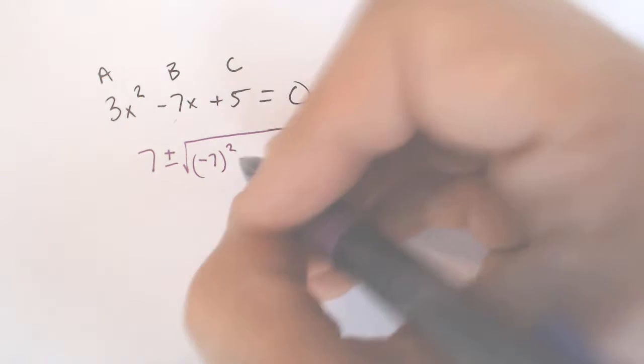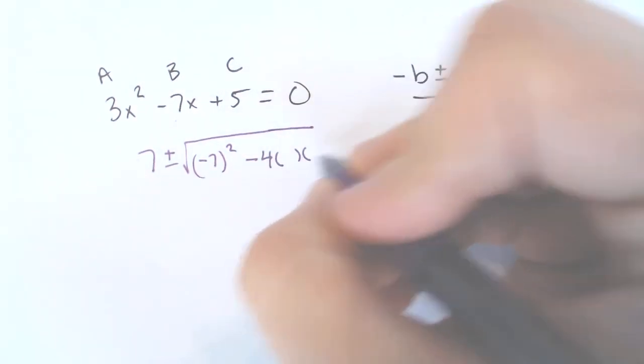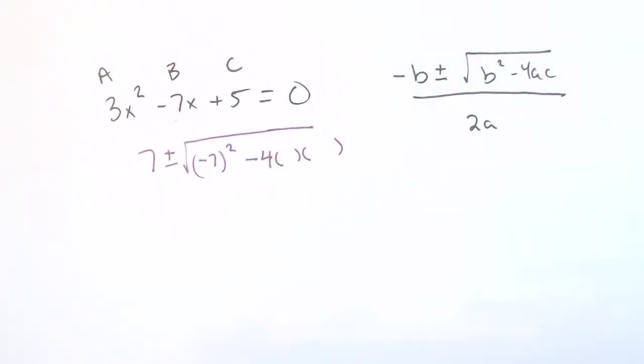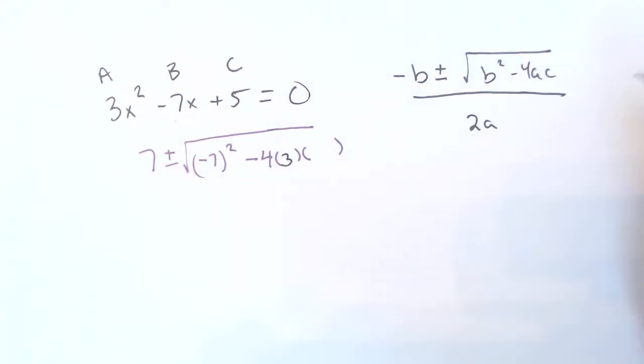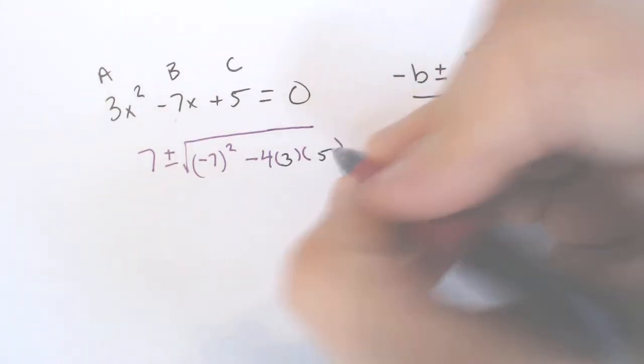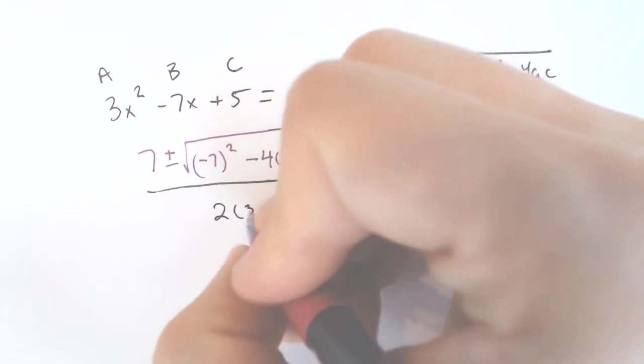Plus or minus the square root of negative 7 in parentheses squared. Anytime you're putting something in for a variable, I would recommend you put it in parentheses like I'm doing, times a, which is 3, times c, which is 5, all over 2a, which is 2 times 3.